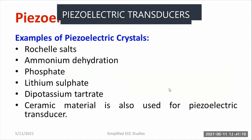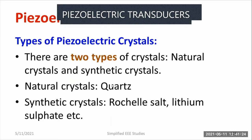What are the examples of piezoelectric crystals? Rochelle salt, ammonium dehydration phosphate, lithium phosphate, potassium tartrate, and ceramic material. These are the different types of piezoelectric crystals that can be used in a piezoelectric transducer.